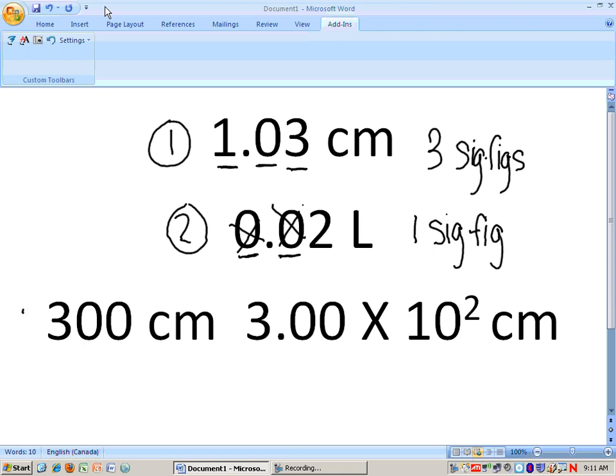Rule number three. Zeros at the end of a number are only significant if there is a decimal point. So, in the first number, you see 300 centimeters. There is only one significant figure in this number because there's no decimal at the end. The zeros after a number do not count.